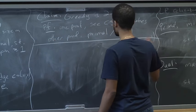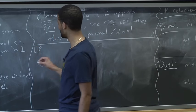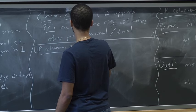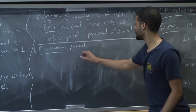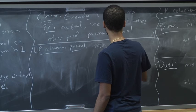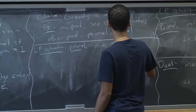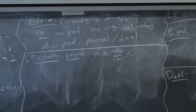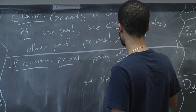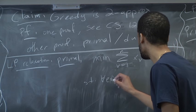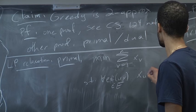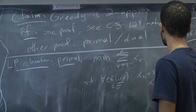Let me write an LP relaxation. Primal: minimize the sum over v from 1 to n of XV, which is whether or not you take vertex v into your vertex cover. Subject to: for all edges E being UV in the edge set, XU plus XV is at least 1, and X is at least 0 entry-wise.